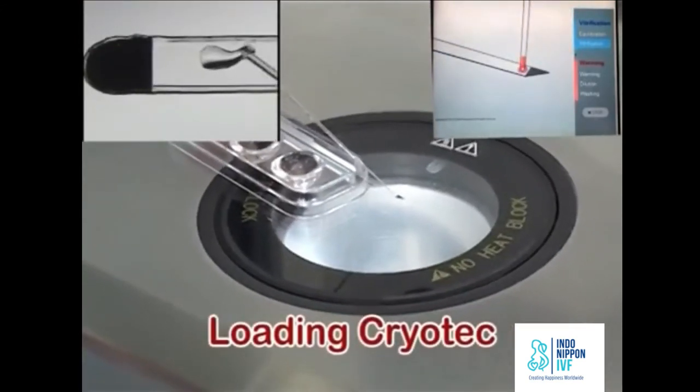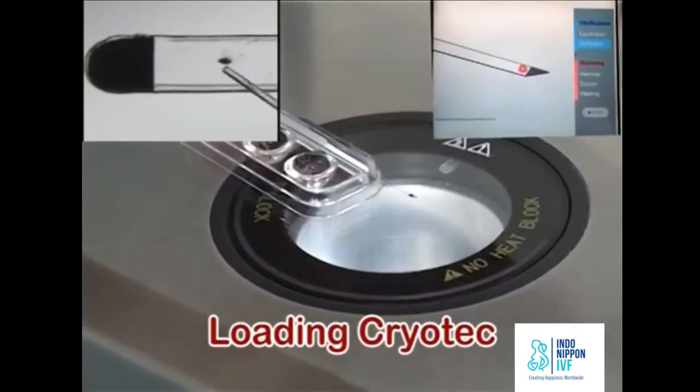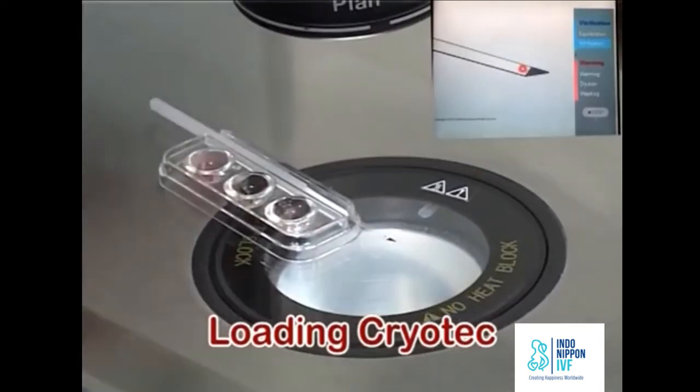Get the cryotech tip under the microscope. Place the oocyte near the end of cryotech sheet with minimal volume of VS-2. One oocyte per droplet is recommended.